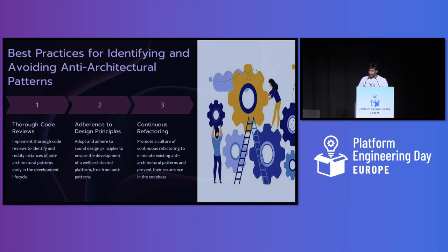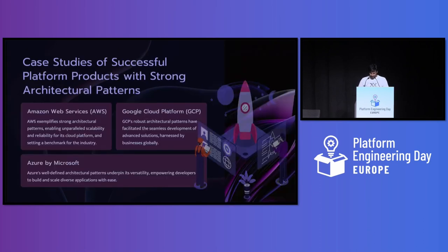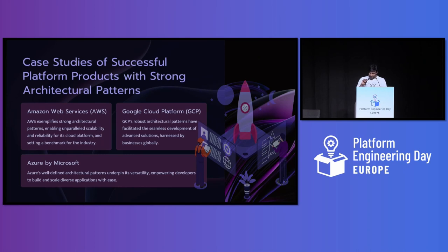Continuous refactoring: we should promote a culture of continuous refactoring to eliminate anti-architectural patterns. Three successful case studies: Google Cloud — robust architectural design enabling seamless scalability and innovation. Azure — clean and modular architecture supporting rapid feature development and adaptability. AWS — well-structured architecture enabling sustainable growth and easier maintenance.